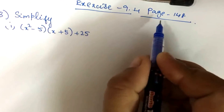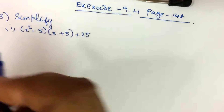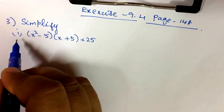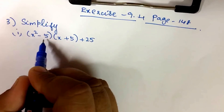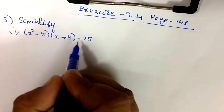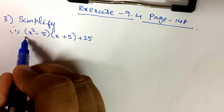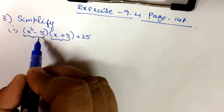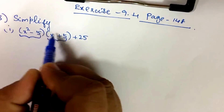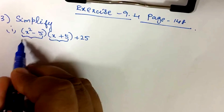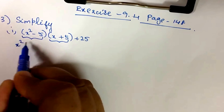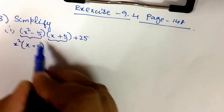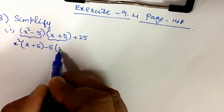Section 9.4, page 148, problem number 3. Simplify question number 1: (x² - 5) into (x + 5 + 25). This is one expression multiplied by another. We take x² from the first expression and multiply with the whole second expression, and then minus 5 into (x + 5).